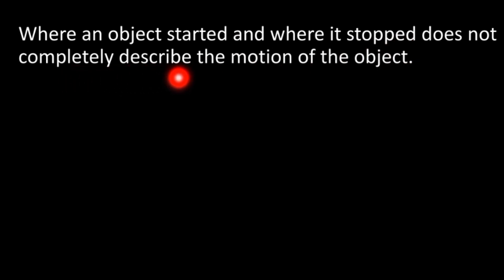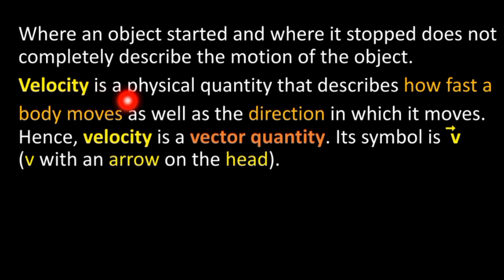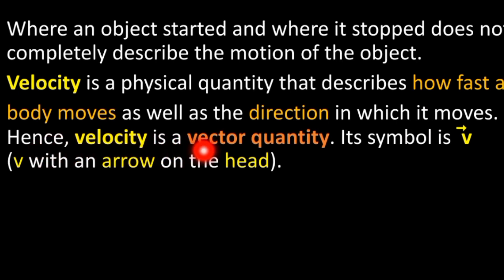Where an object started and where it stopped does not completely describe the motion of the object. Velocity is a physical quantity that describes how fast a body moves as well as the direction in which it moves.